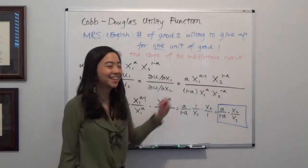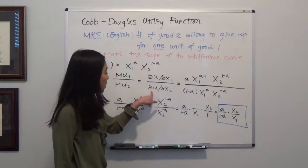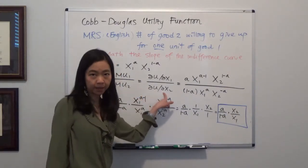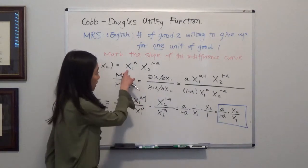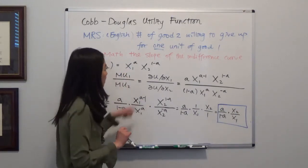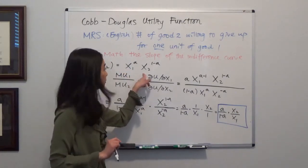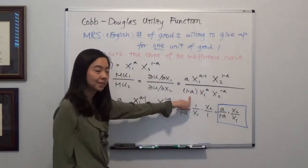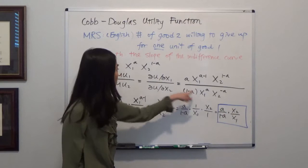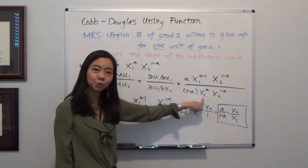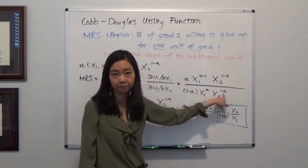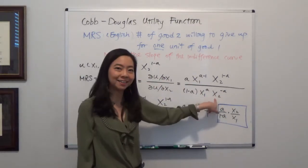And downstairs we have the partial derivative of utility function with respect to x2. So we're going to treat x1 as a constant and only take the derivative of x2. So we take down the one minus a and we keep x1 to the a power. We don't do anything to it. And then one minus a minus one is negative a. So that's the way it is.